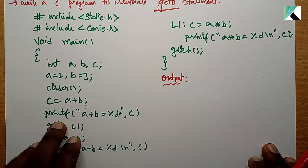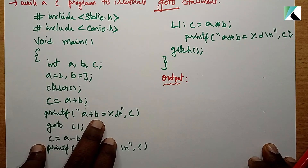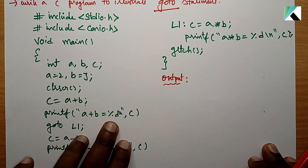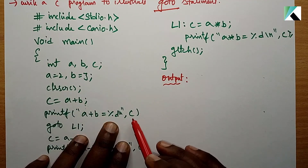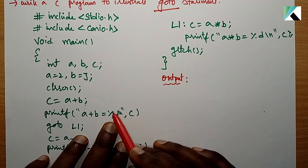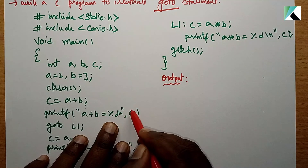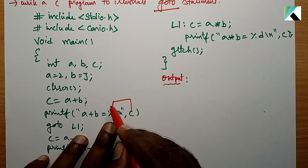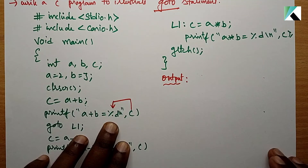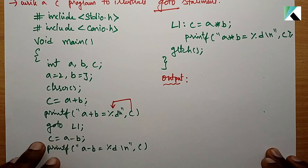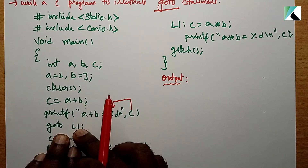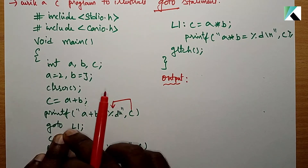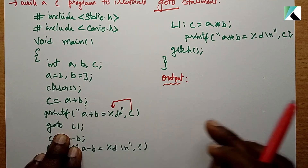Next, we have a printf statement: printf("A plus B is equal to %d", C). Then we write goto L1. So when goto L1 is encountered, control jumps to label L1.